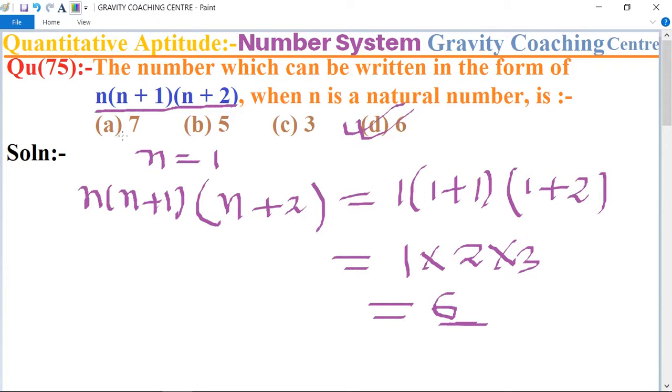And 3, 5, and 7 we can't write in the form of n(n+1)(n+2). Thank you.